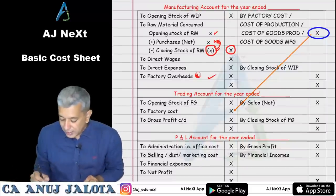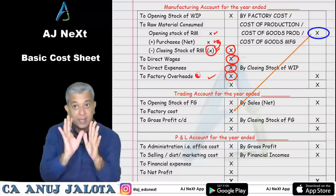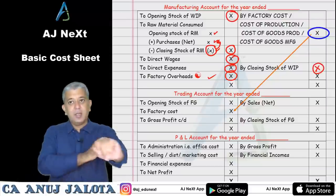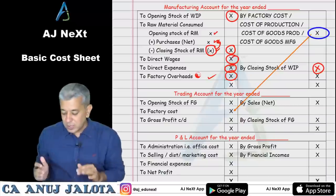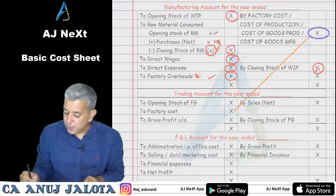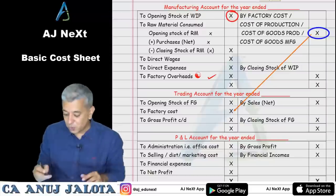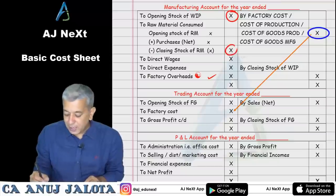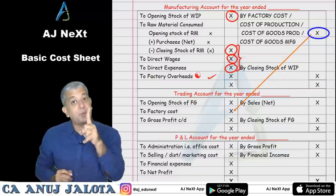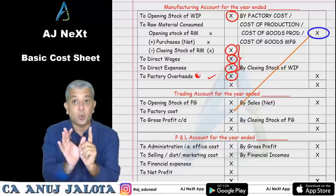After raw material consumed: direct wages, direct expenses, factory overheads — but note the difference between factory overheads here and in cost accounts. Then add opening stock of WIP, less closing stock of WIP. Now if I convert this into statement form: direct material consumed, add direct wages, add direct expenses — their total is prime cost. Add factory overheads — and these factory overheads include more than in costing. That gives gross factory cost.